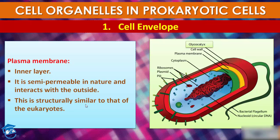The plasma membrane is structurally similar to that of eukaryotes. So these are the three tightly bound layers — glycocalyx, cell wall, and plasma membrane — that form the cell envelope in prokaryotes.